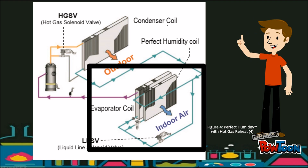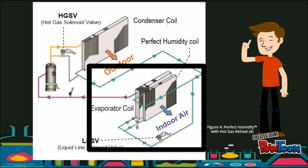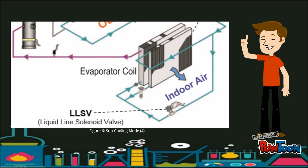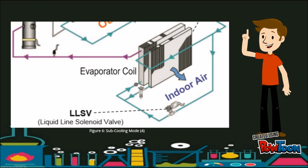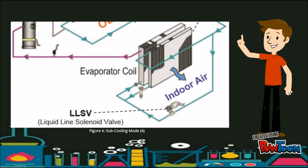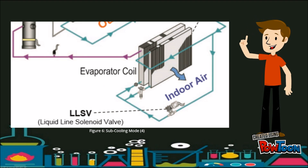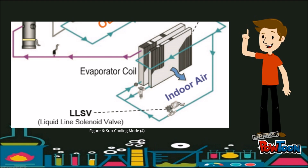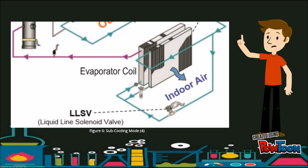Downstream of the condenser, and then through the evaporator. The indoor air stream passes over the evaporator first, then over the perfect humidity coil, further sub-cooling the refrigerant. This highly sub-cooled refrigerant is then fed to the evaporator coil, creating a colder evaporator coil surface.